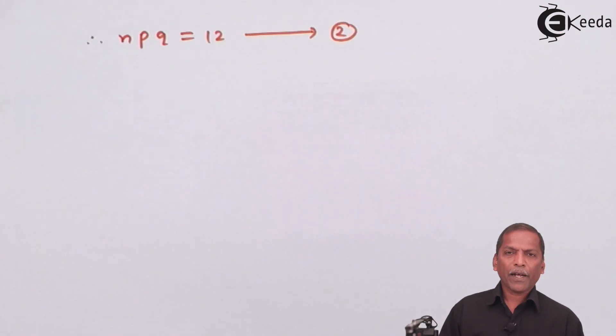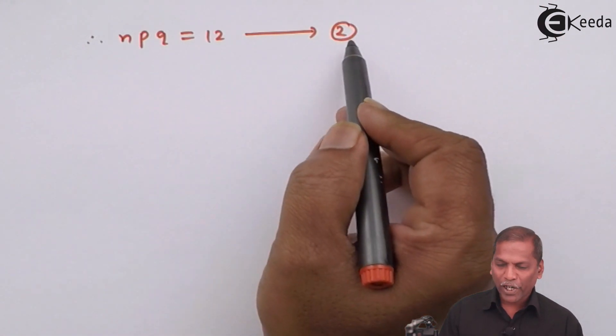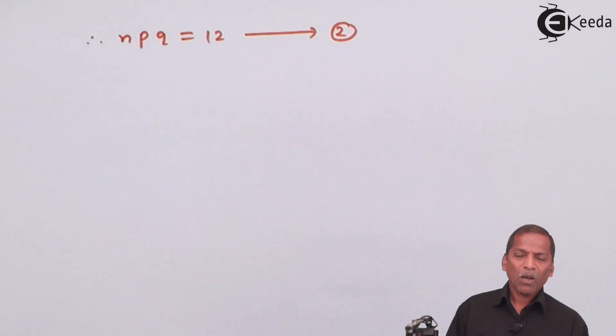Let us denote as equation number 2. Now, here we have to find the value of q. So divide equation 2 by equation 1 we get.